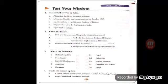Now, Test Your Wisdom — True or False. All the things we have already done in Unit 3; these questions have been taken from that. First: Alexander the Great belonged to Rome — False. Second: Mahatma Gandhi was assassinated on 30th October 1948 — False. Third: La Marseillaise is the national anthem of France — True. Fourth: Supreme Soviet is the parliament of India — False. Fifth: Hyde Park is in Italy — False.